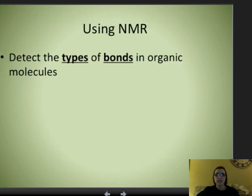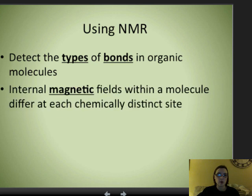So what this means is we can use NMR to detect the types of bonds in organic molecules. So this is why you'll study it much, much more in organic chemistry. You'll go much more into detail in reading the NMR spectrum. We're just doing a brief overview for now. And so we can detect the types of bonds in organic molecules.